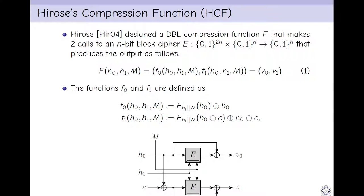Hirose designed a DBL compression function F that makes 2 calls to an n-bit block cipher E that produces the output as follows. F on input H0, H1, M outputs using the functions F0 and F1, where the functions F0 and F1 are defined as F0 on input H0, H1, M equal to E of H0 XOR with H0, where H1 is the key input to the block cipher.